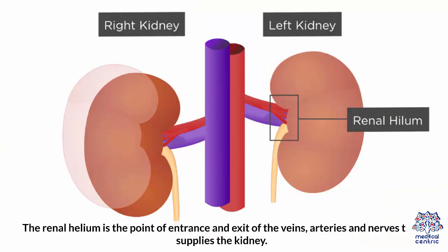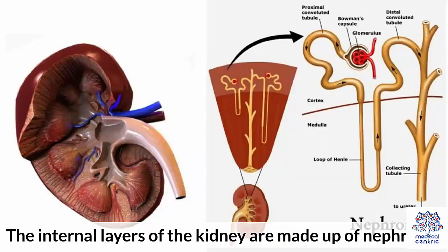The renal hilum is the point of entrance and exit of the veins, arteries, and nerves that supply the kidney. The internal layers of the kidney are made up of nephrons.